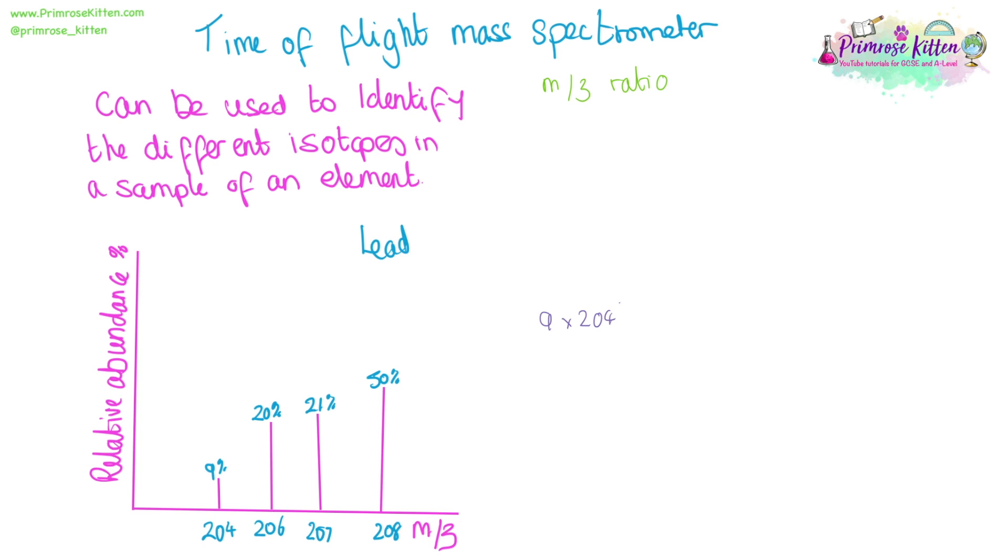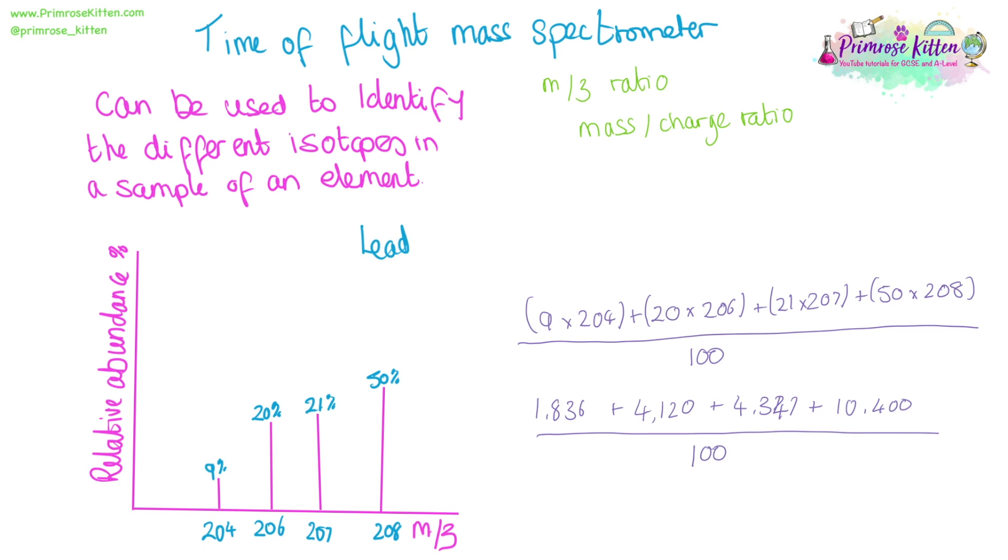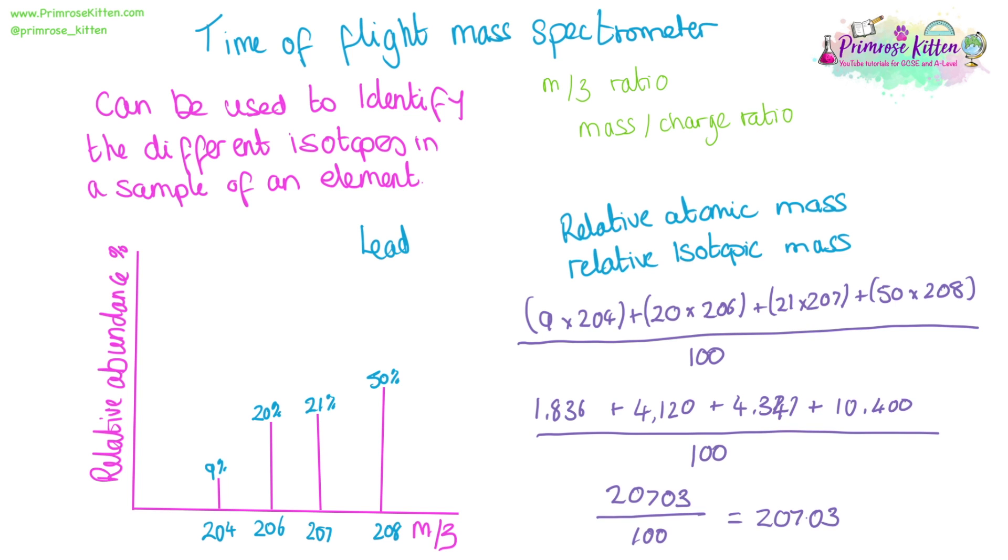To work out the average isotopic mass of lead, what you actually see on the periodic table, we take the percentage and times it by the mass. The percentage times by the mass. The percentage times by the mass. And then, because all of the percentages add up to 100, we can divide them all by 100. Which will give us 207.03 as the average isotopic mass of lead. We can see this on the periodic table as the relative atomic mass, or as a relative isotopic mass.